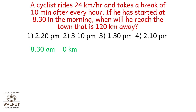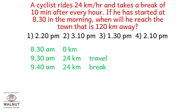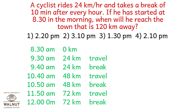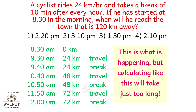At 8.30 a.m. he covers 0 kilometers. At 9.30, at 24 kilometers per hour, he covers 24 kilometers. At 9.40 he still covers 24 kilometers because he has taken a break. Then at 10.40 he covers 48 kilometers. At 11.50 he has covered 72, then at 12.00, 72 again for a break. But calculating this will take just too long.